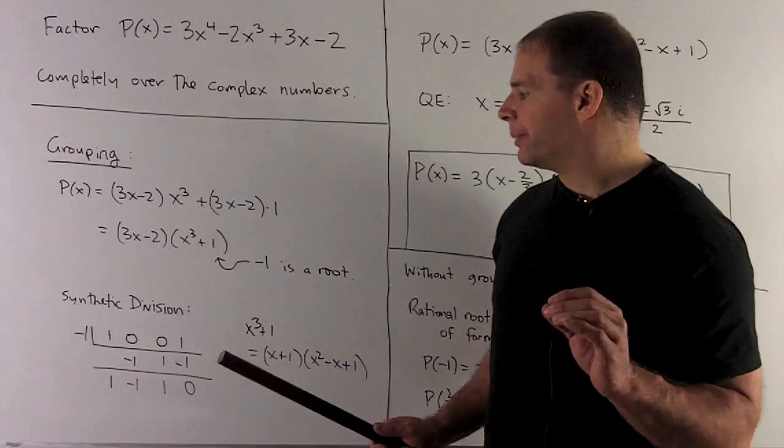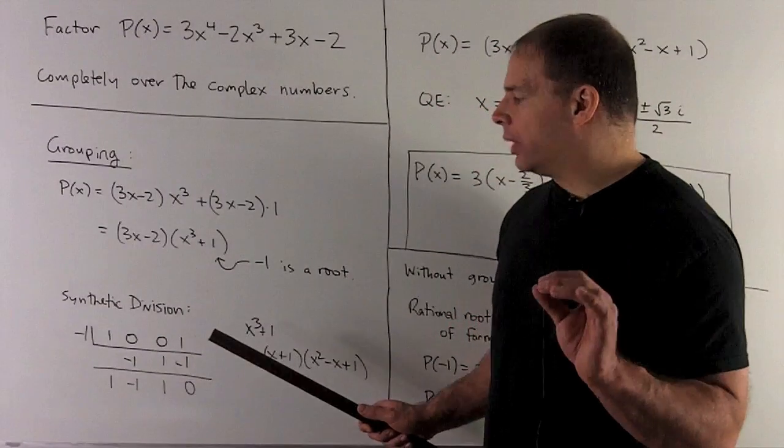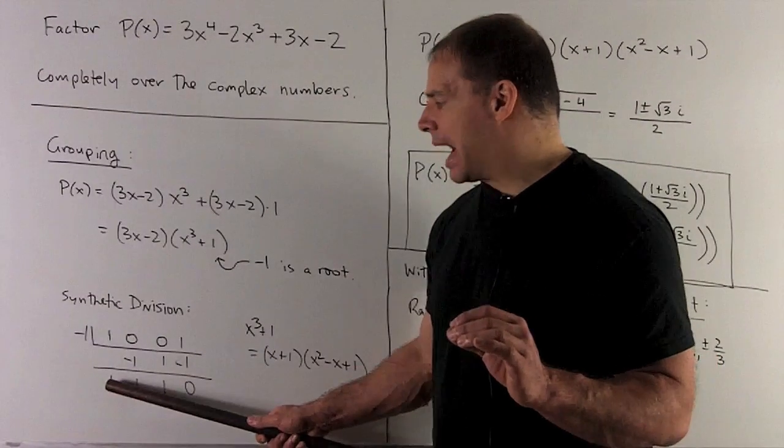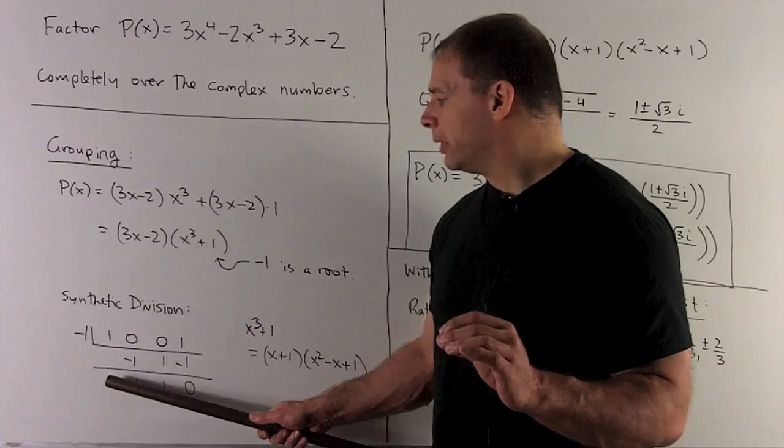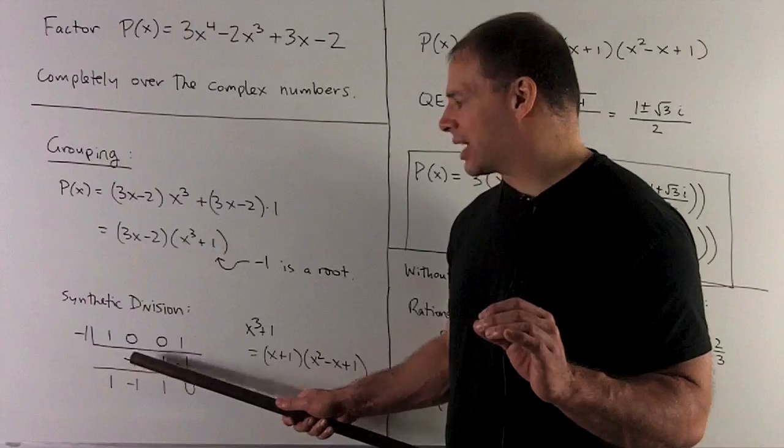Then what we're going to do is I'm going to add down each column. And then once I go down to the bottom of the column, we're going to multiply by our root, record the product in the middle row, next column.